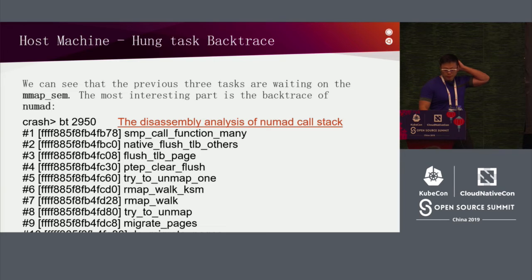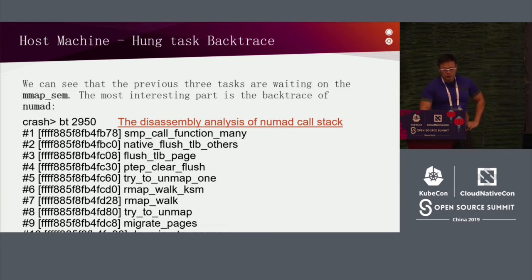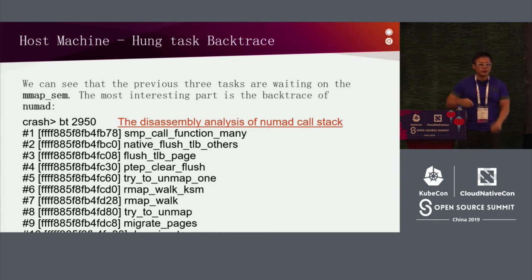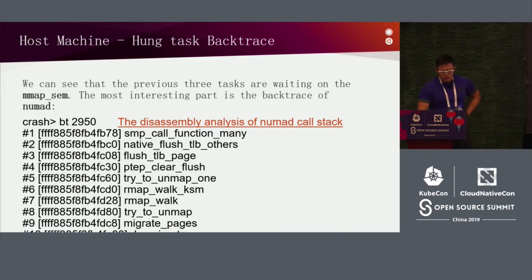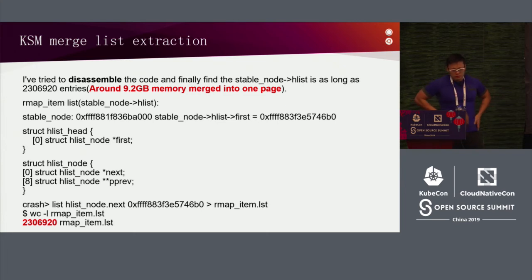When migrating a page from one NUMA node to another, the page table entry (PTE) must be updated and the TLB cache needs to be refreshed. This refresh must happen step by step across page tables. The key issue is that the KSM page being migrated has over 200 MB of mapped pages, so it cannot be migrated by a single machine — over 200 MB of pages are merged into one KSM page.